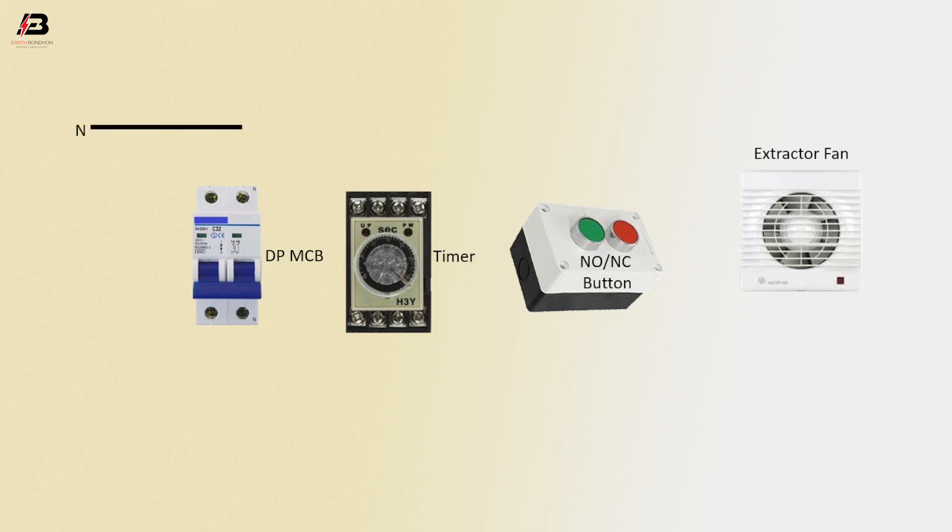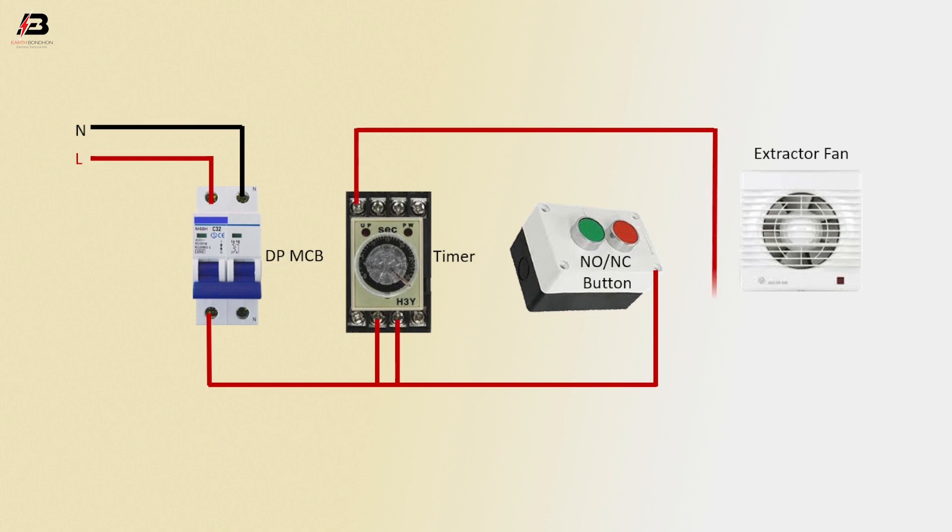Extractor fan. Neutral connection to double pole MCB. Phase connection to double pole MCB. Phase connection from double pole MCB to connect NO/NC button. Phase connection to timer. Phase connection output from timer to connect extractor fan. Neutral connection from double pole MCB to connect extractor fan.